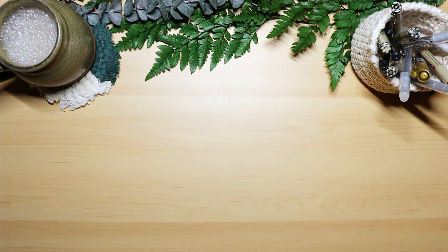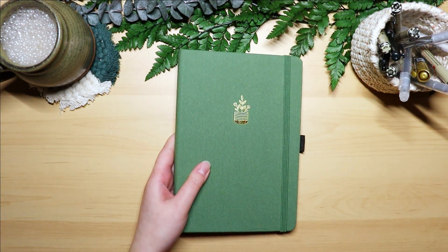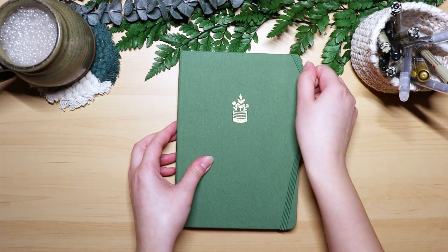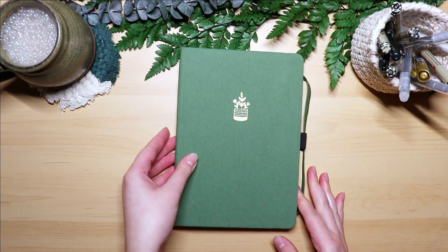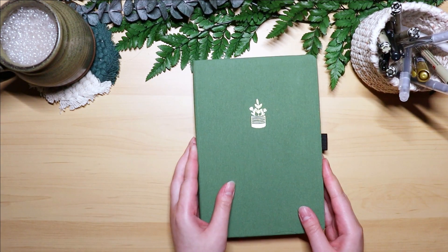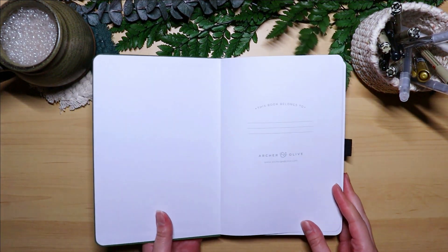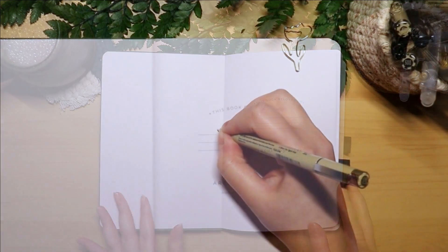With the new year comes time to switch to a new bullet journal. This is an A5 dot grid notebook from Archer and Olive. I love their products and this one was gifted to me about a year or two ago. It's a beautiful green with gold foiled flower pot on the cover.